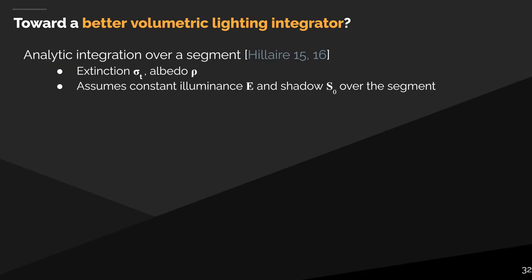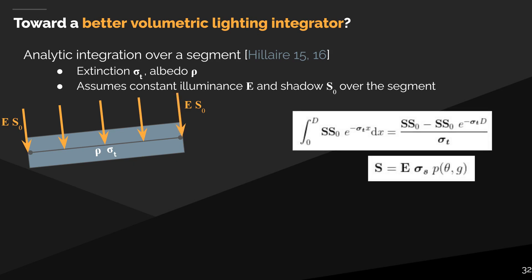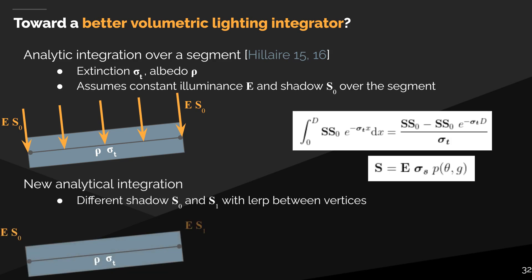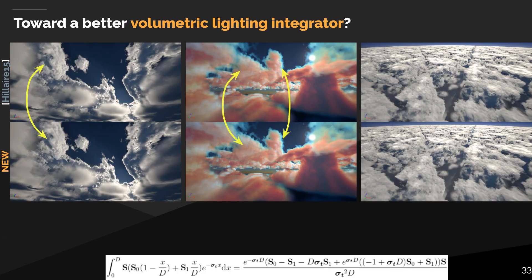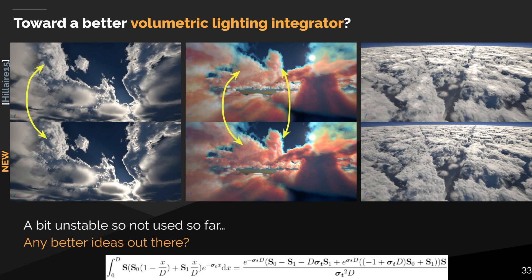When ray-marching the volumetric data, you need to consider how you integrate the lighting. Previously, I presented an analytical solution better than Simpson's or trapezoidal integration because it respects Beer's law over a considered segment. However, it only supported a single shadow value over the segment. I considered improving this by taking into account a different shadow value per vertex linearly interpolated over the segment — you can see the analytical integration result. It does help better define the cloud shape and resolve some visual artifacts on top of the cloud. We are not using it yet because it is a bit more expensive and unstable due to division by the squared extinction, requiring clamping to avoid numerical precision issues.